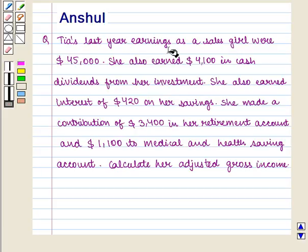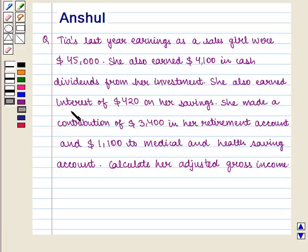Tia's last year earnings as a sales girl were $45,000. She also earned $4,100 in cash dividends from her investment, and interest of $420 on her savings. She made a contribution of $3,400 to her retirement account and $1,100 to a medical and health savings account. Calculate her adjusted gross income.